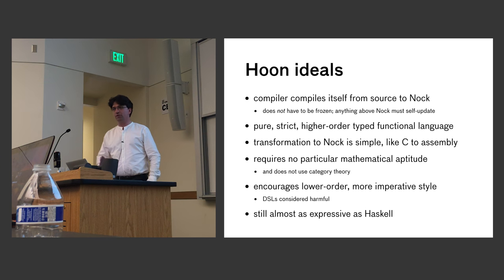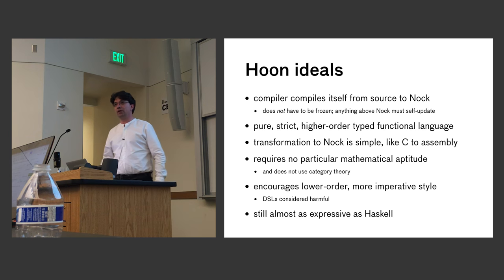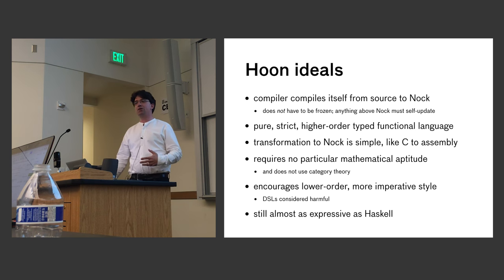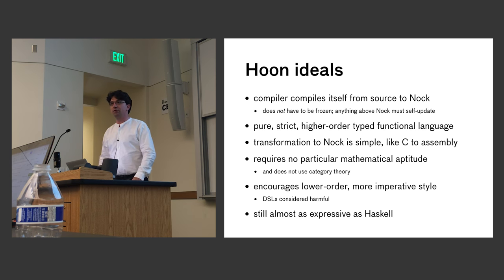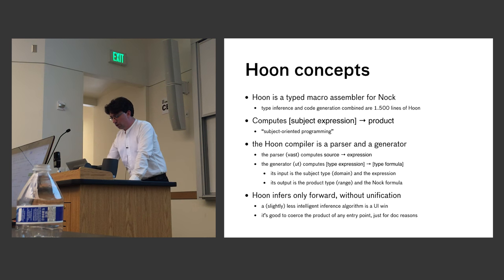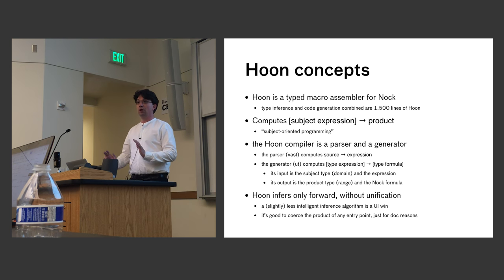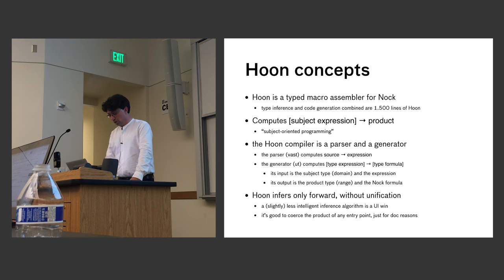Hoon is still basically almost as expressive as Haskell — it has the equivalent of type classes, it has genericity. The back end of Hoon is extremely simple: type inference and code generation together are about 1,500 lines of code. Where Nock does subject and formula to product, in Hoon we have actual expressions in user-level code. The experience of programming where you just have the subject — one noun containing everything — is somewhat unique and different.